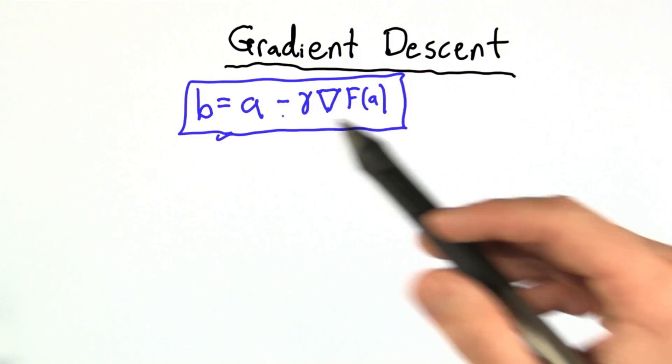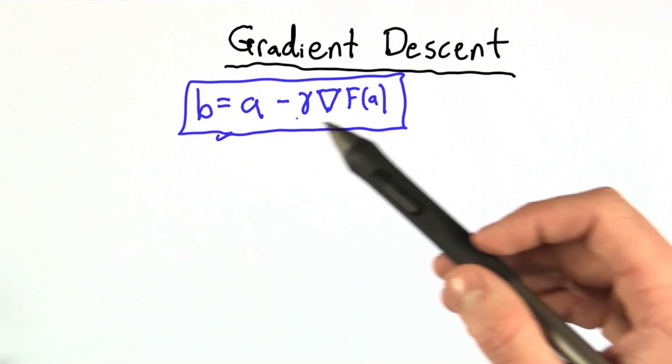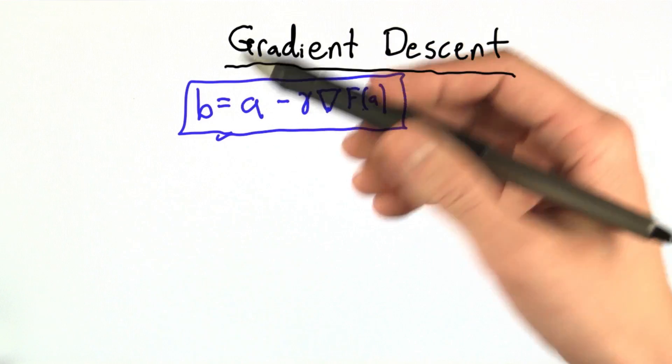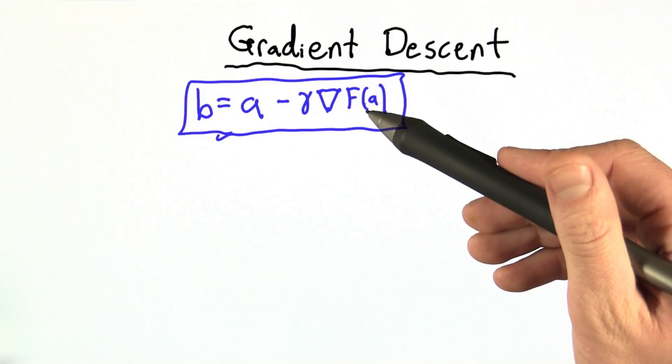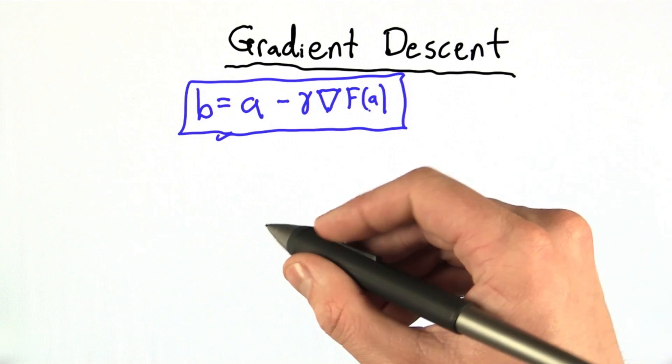Now, this is a little intimidating at first. What do all of these parameters mean? b equals a minus gamma times the gradient of the function evaluated at a. Let's figure out what's going on here.